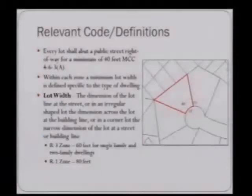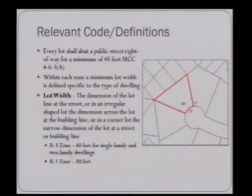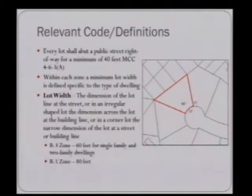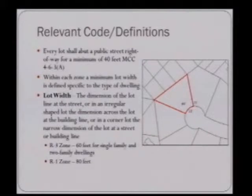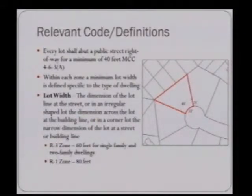Before I get into the details of the application, I'd like to provide a couple of code provisions and definitions relevant to the application. From Chapter 6 of the zoning code, every lot shall abut a public street right-of-way for a minimum of 40 feet. However, within each zone, a minimum lot width is defined that is specific to the type of dwelling. Lot width is defined as the dimension of the lot line at the street, or in an irregular-shaped lot, the dimension across the lot at the building line, or in a corner lot, the narrow dimension at a street or building line. For example, in the R3 zone, the minimum lot width requirement is 60 feet for single-family and two-family dwellings, and in the R1 zone, it's 80 feet.